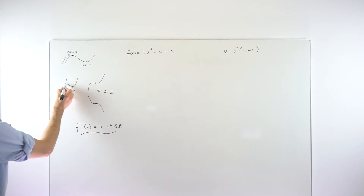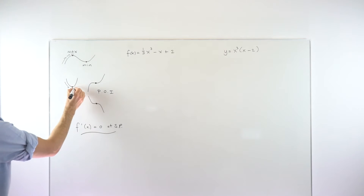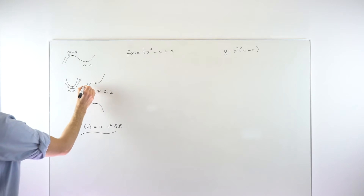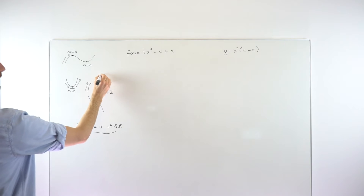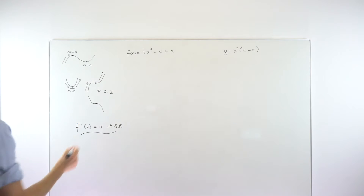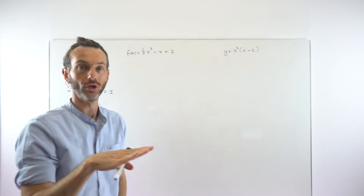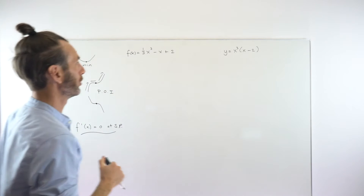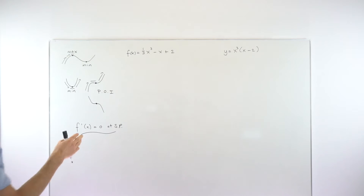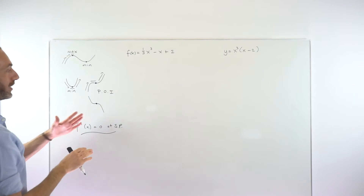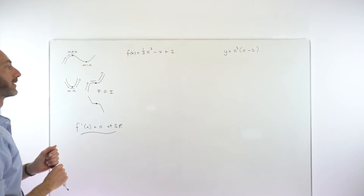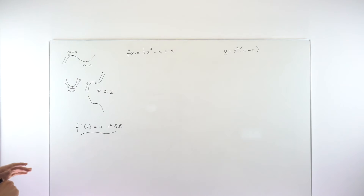You can see this one is sloping down, then goes to zero, then slopes up. This one goes up, then zero, then continues up. In between all these changes of direction you've got that stationary point — it's called a stationary point because the gradient, the derivative, goes stationary to zero at that particular point.